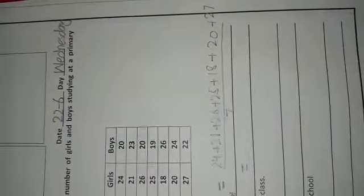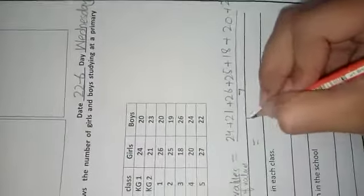You have to add these values. When you add these values, the answer is 161 over 7.